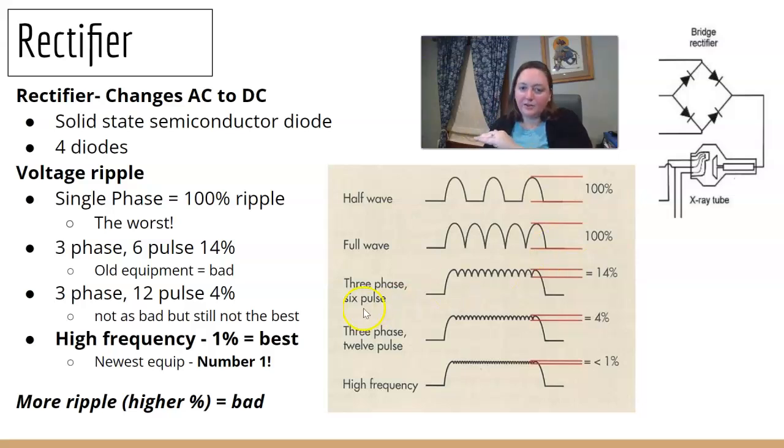The next equipment that we got, three phase, six pulse, fixed it a little bit. Because it added more pulses. So there was less drop. So now the ripple is only 14%. Three phase, 12. Again, we doubled those pulses to 12. It's only dropping 4%. And now your high frequency, it's dropping 1% or less. And so less ripple, the better. So I want you to remember, single phase is 100. High frequency is 1. We want the 1%. Because that's ideal.